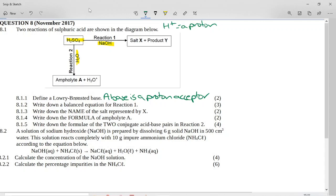Now it says write a balanced equation for reaction one. So if we look at reaction one, we've got sulfuric acid, which is an acid, plus sodium hydroxide, which is a base. And if you know your general reactions, you know an acid and a base goes to a salt and water. So there's my water, easy to write.